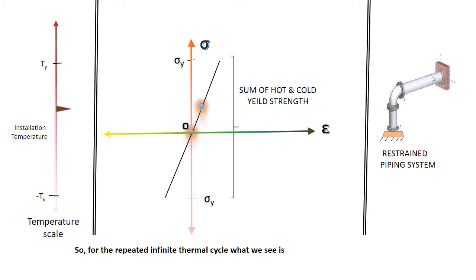So for the repeated infinite thermal cycle, what we see is actually the material is operating in a strength range of value which is twice the absolute strength value.